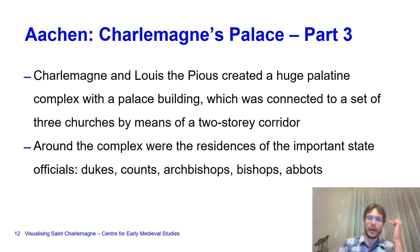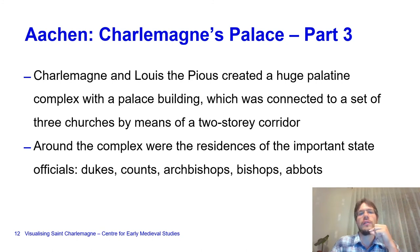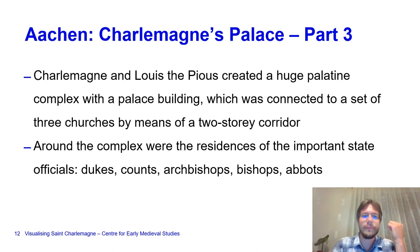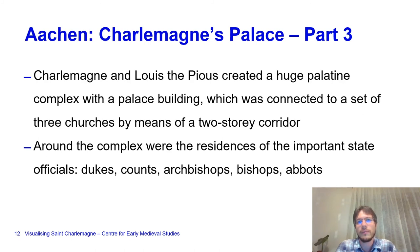Charlemagne and Louis the Pious created a huge palatine complex with a palace building—the actual place with Charlemagne's throne, a banqueting hall, and the throne room—connected to a set of three churches by means of a two-story corridor. Around the complex were the residences of important state officials: dukes, counts, archbishops, bishops, abbots. Since it had become a permanent imperial residence, these officials and visitors had to have their own permanent residences at court.